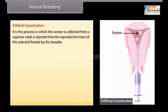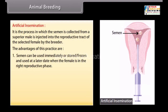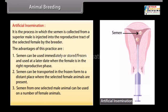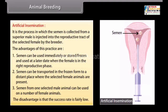Artificial insemination is the process in which semen is collected from a superior male and injected into the reproductive tract of a selected female. Advantages include: semen can be used immediately, stored, or frozen for later use; it can be transported frozen to distant locations; and semen from one male can be used on multiple females. The disadvantage is that the success rate is fairly low.